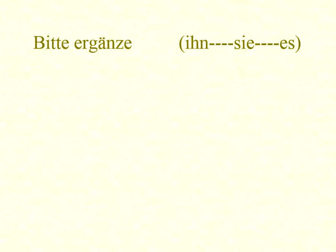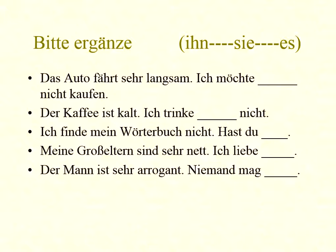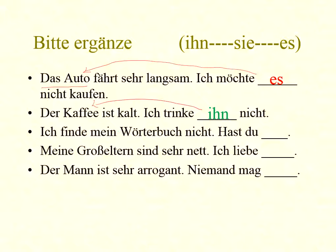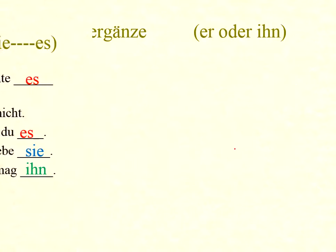More examples: 'Das Wetter' — it is the first one. 'Der Kaffee' — the article is 'der,' so it becomes 'ihn.' 'Ich trinke ihn.' 'Das Wasser' — 'ich trinke es.' 'Das Buch' — 'ich habe es.' 'Ich liebe sie' — because the article is 'sie' (feminine). 'Der Mann ist arrogant — niemand mag ihn,' because the article for 'er' takes 'ihn.'